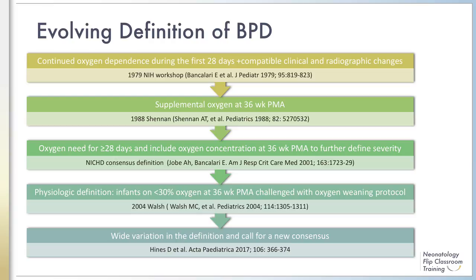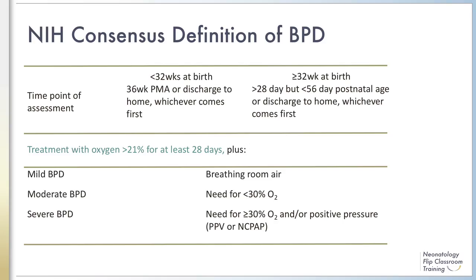However, despite this effort, marked differences in the use of various definitions of BPD still exist. A BPD definition such as the Shannon criteria that classifies infants at a single point in the clinical course of BPD at 36 weeks ignores the chronicity of their respiratory course. The 2000 NICHD consensus definition, as shown in this table, attempts to address this issue by requiring a minimum of 28 days of supplemental oxygen to make the diagnosis of BPD, and also tries to classify the severity of BPD by including oxygen concentration at 36 weeks post-menstrual age.